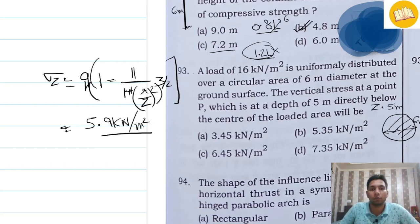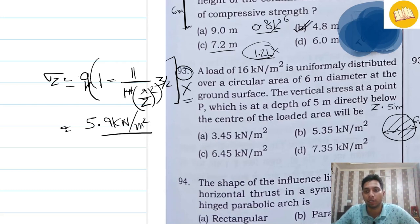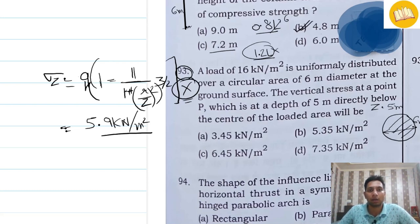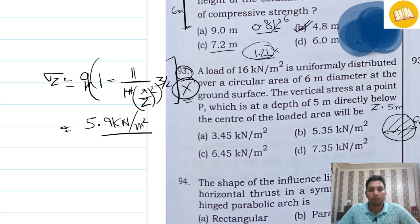Since the answer of approximately 5.9 kN/m² does not match any of the given options, this question is also incorrect. Therefore, this question will likely be removed from the commission's answer key when the final result is announced.